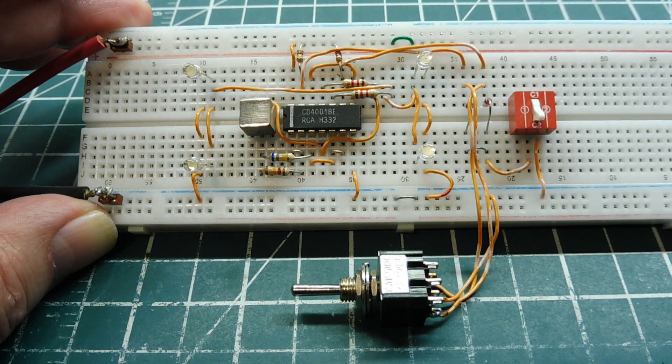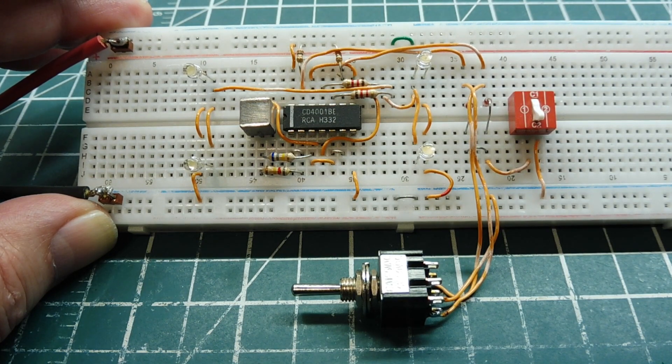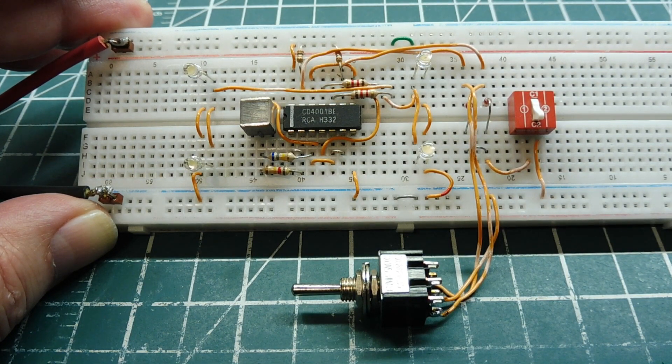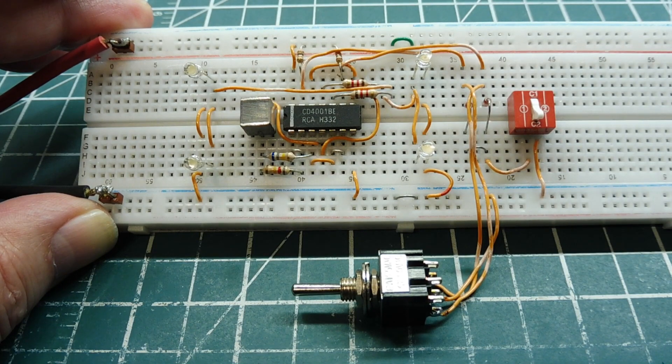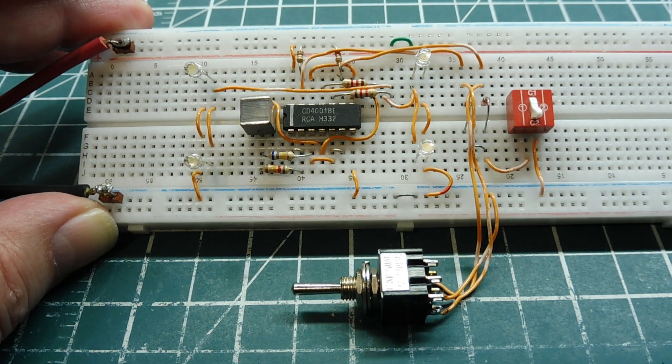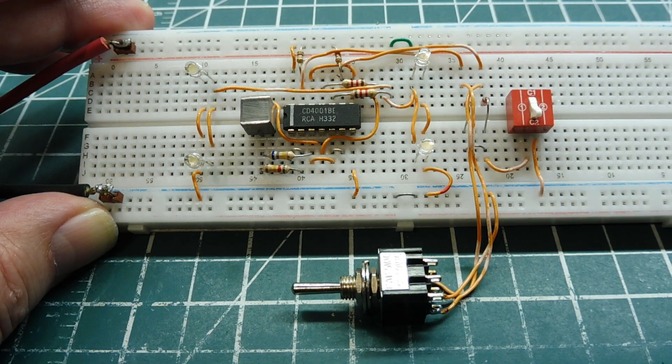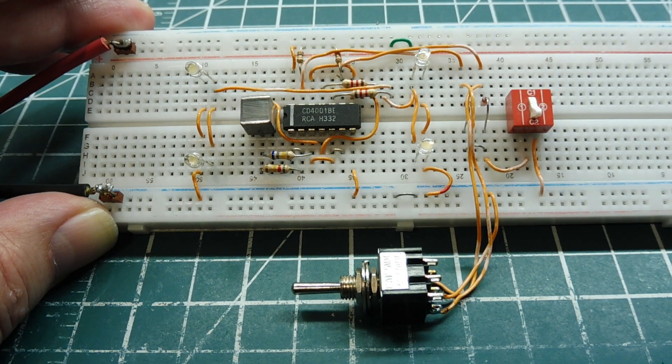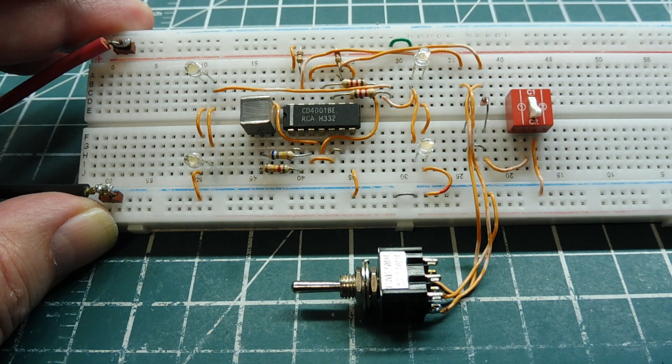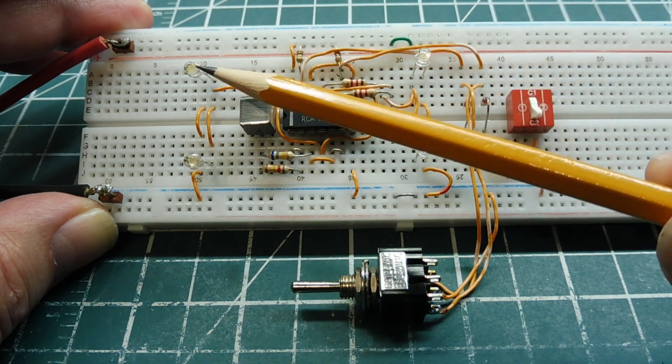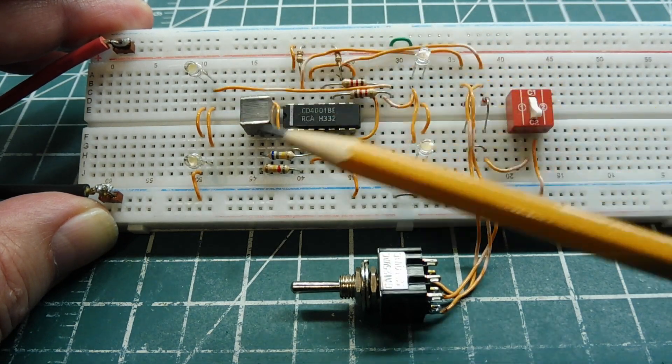But normally when I build a digital logic circuit, I like to solve a problem or do something useful and make it relatable. So I'm going to relate this circuit to the turn signal logic which could be on a car or a motorcycle. You can see I have four LEDs on my board: these are my front LEDs, these are my rear LEDs.